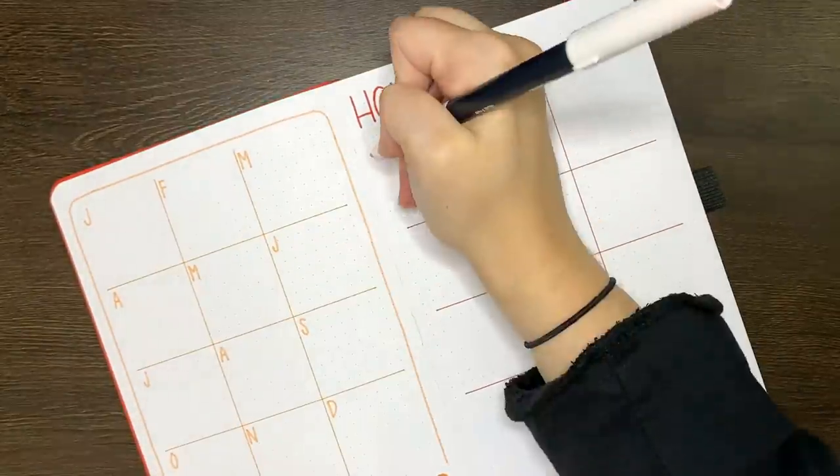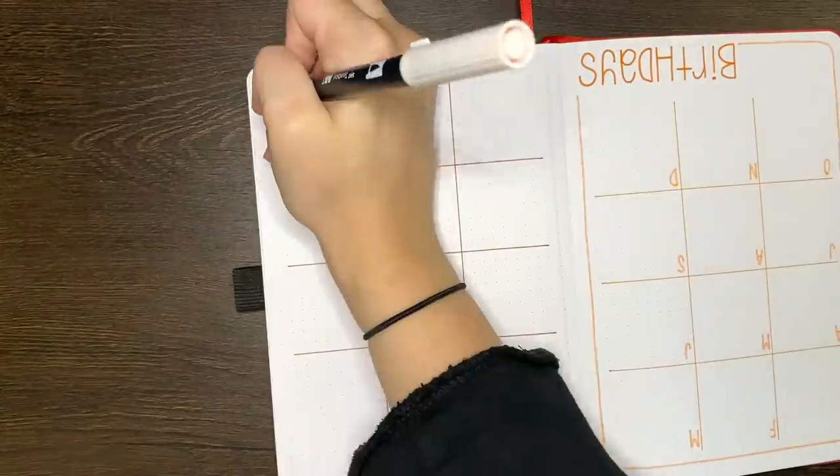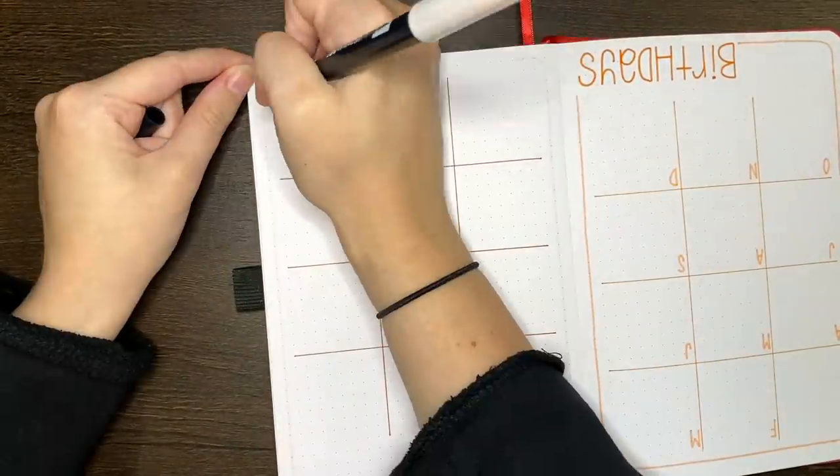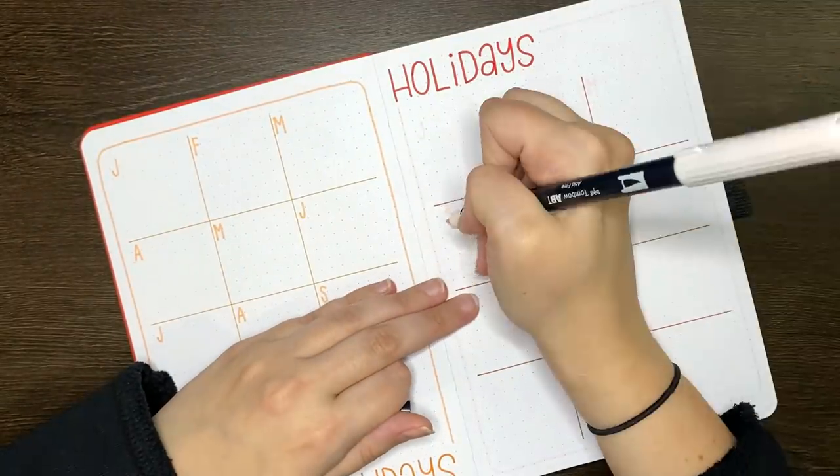Another common element that I'm putting on a good chunk of the pages in this bullet journal are the simple rounded corner borders. I've done these in a lighter shade for any page's header, so for instance, bright orange header, light orange border.